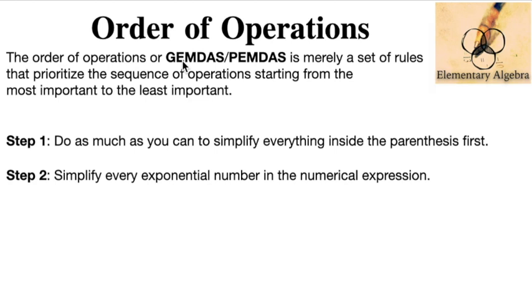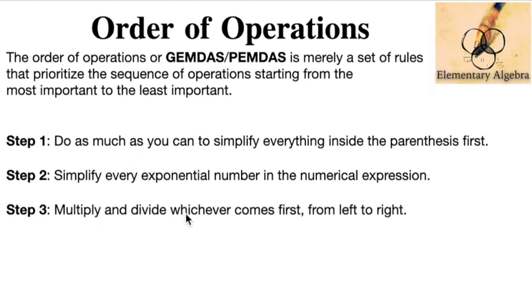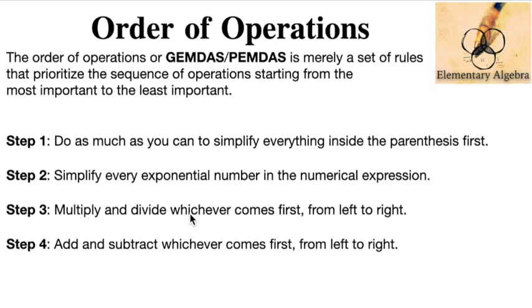Step number three, multiply and divide whichever comes first from left to right. M and D are taken all together, and lastly addition and subtraction is also taken together, whichever comes first from left to right. So every time you're given a long series of numbers with operations between them, just remember the GEMDAS rule.